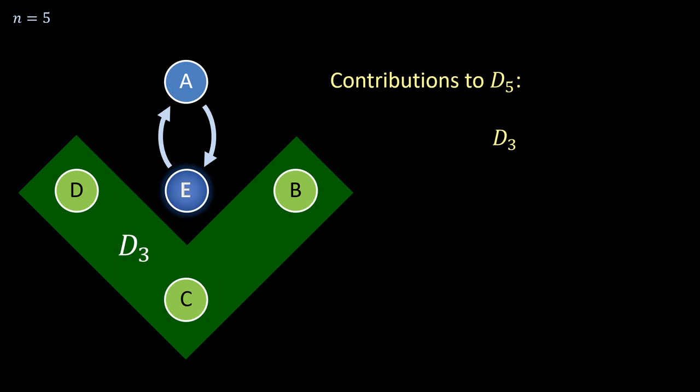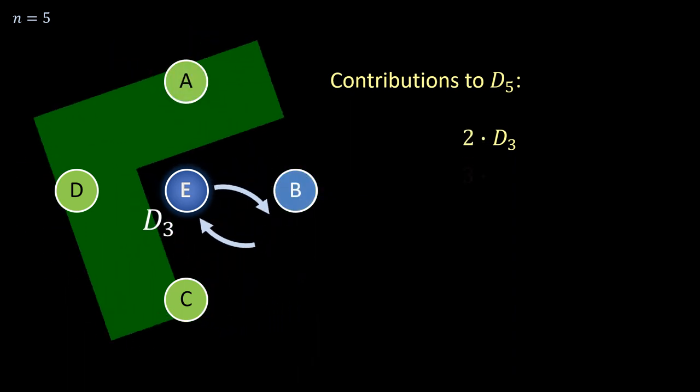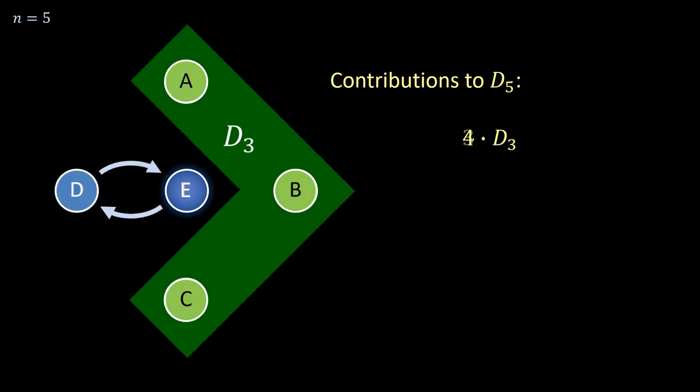So the two-cycle ea contributes D_3 derangements to the grand total for D_5. But of course, e can form two cycles with any of the four existing elements. Therefore, two cycles containing the new element e contribute a total of four times D_3 derangements.